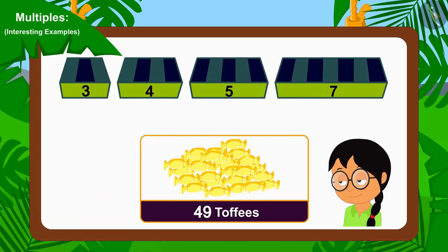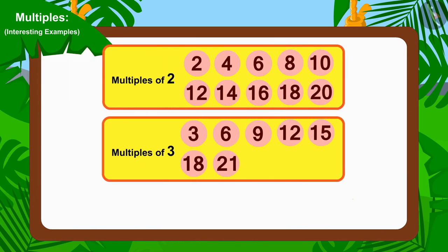Therefore, Minu cannot use groups of three to distribute 49 toffees. And children, you remember the multiples learned in the previous video, don't you? Because we cannot divide 49 by three, we can say that 49 is not a multiple of three.